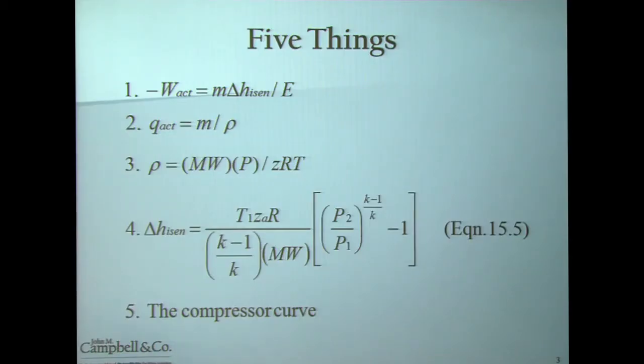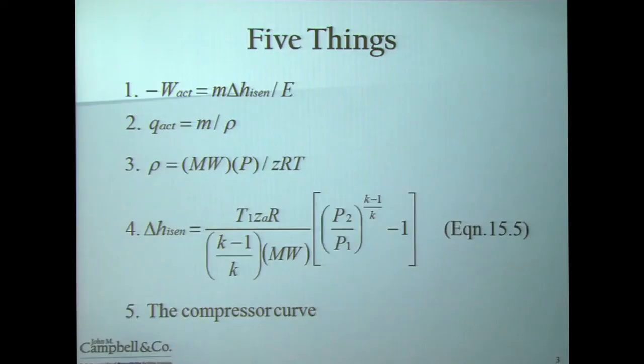The first principle is the ability to calculate power. And power comes from one of the earlier chapters in heat and material balances, where the actual power is equal to your mass rate times your isentropic change in enthalpy divided by your efficiency. Your actual flow rate is equal to your mass rate divided by your gas density. Equation 3 tells you how to calculate your gas density. All of these 1, 2, and 3 have been reviewed in earlier chapters.